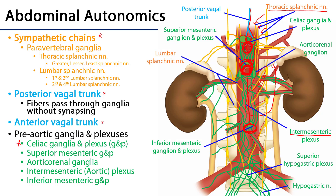At the base of the aortic plexus there is a concentration of fibers called the superior hypogastric plexus, which is contiguous with that aortic plexus. It is innervated by the third lumbar splanchnic nerve and is also continuous with what are known as the hypogastric nerves. Hypogastric nerves are condensations of fibers running between the superior hypogastric plexus and the inferior hypogastric plexuses in the pelvis.